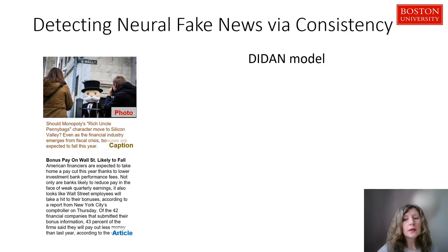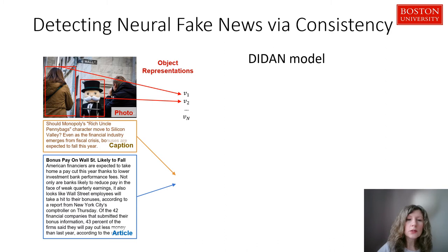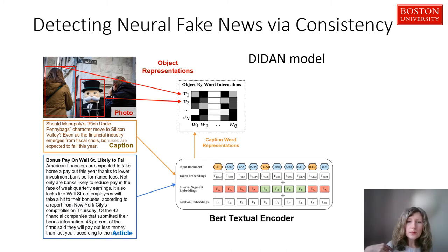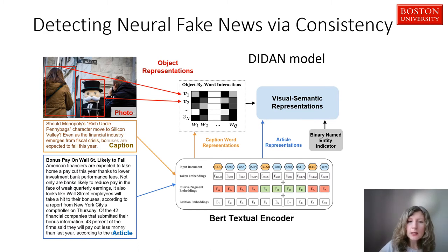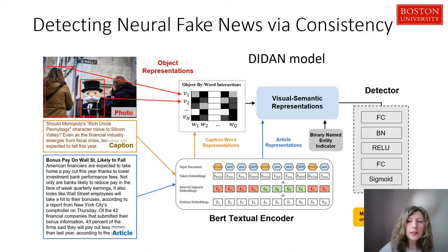At a high level, the model overview is as follows: first we take the image and detect objects, representing them as encoded vectors. We also encode the caption and article words using a BERT encoder. Then we compute cross-interactions or cross-correlations between objects and caption words, and add the article representation to combine the overall representation. We also add a binary named entity indicator — for each named entity mentioned, this feature indicates whether it appears in both the caption and the article. Finally, there are classification layers to predict a binary label: real or fake.